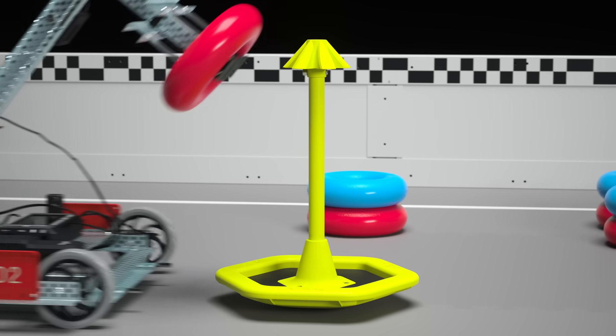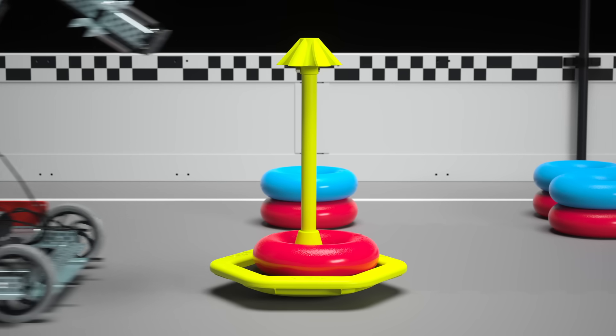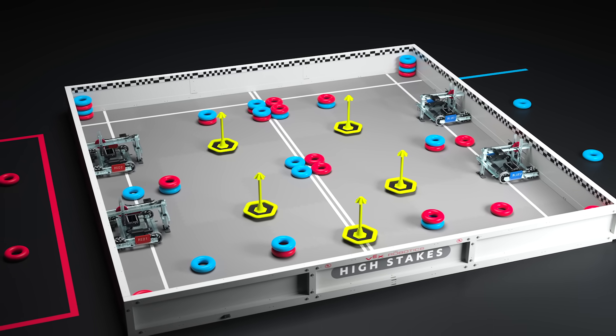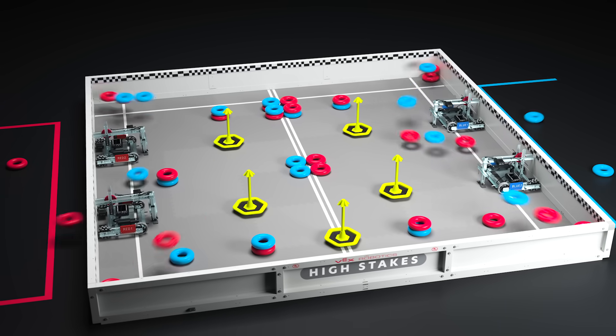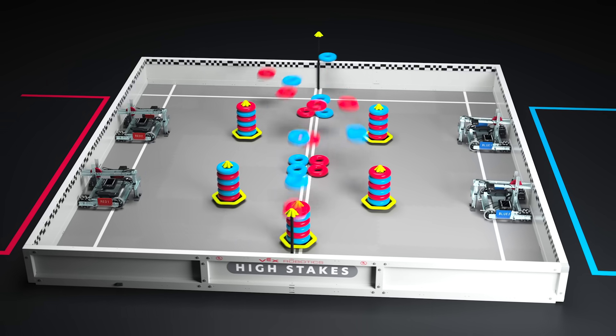Points are scored by placing an alliance's rings onto one inch PVC pipes called stakes. There are 10 stakes located around the field: five stakes that are part of the mobile goals, which can fit six rings each, two wall stakes, which can also fit six rings each,